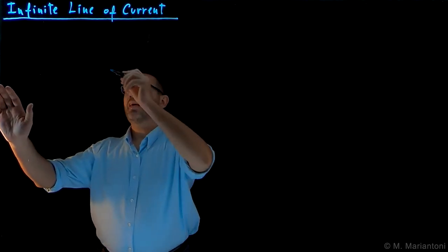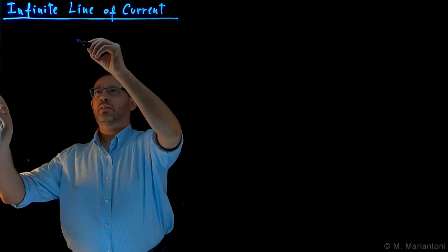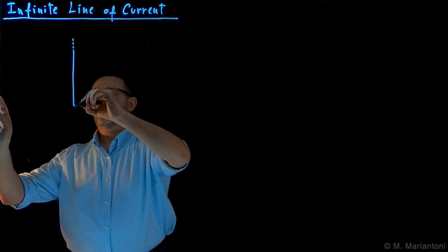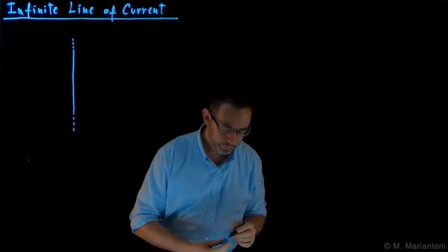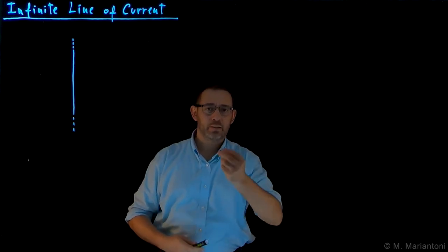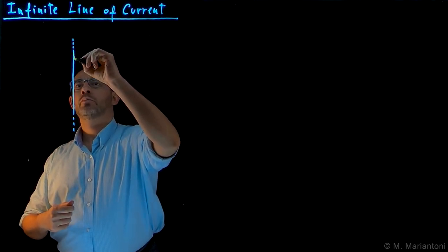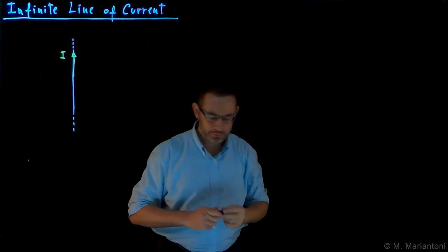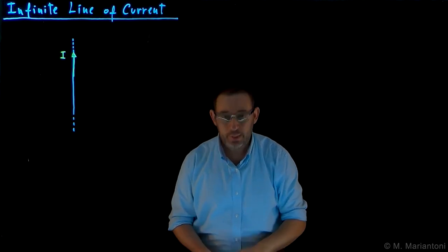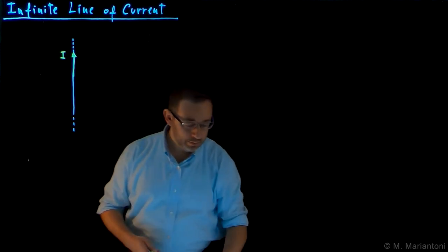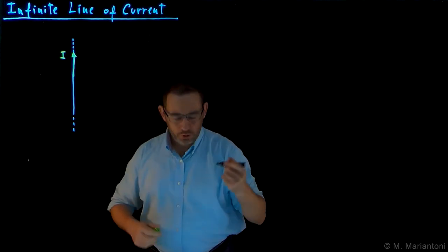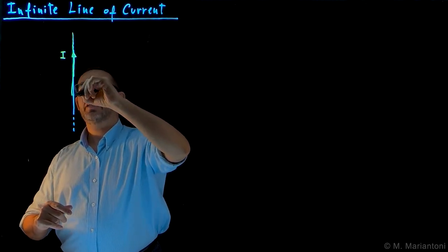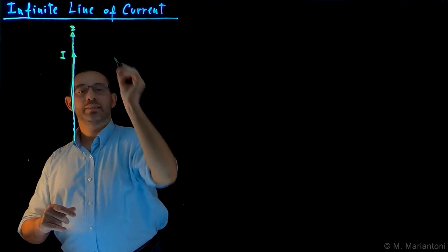Let us consider an infinite straight line. This is our infinite straight line, characterized by a steady — that is, a stationary or DC — current with intensity I. We want to find the magnetostatic field B everywhere in space. Step one: we define a coordinate system. We are going to use a cylindrical coordinate system, where the line itself coincides with the z-axis of the system.